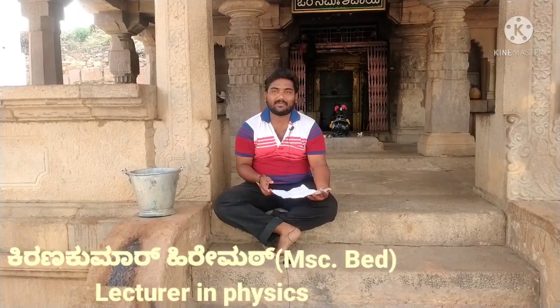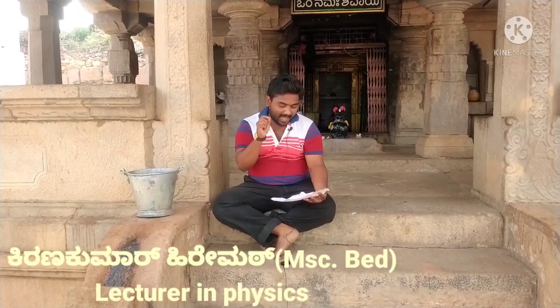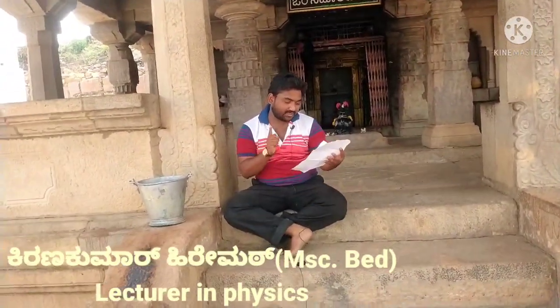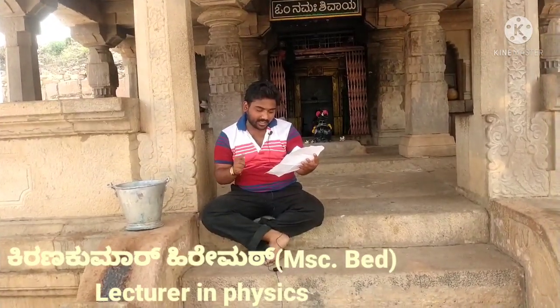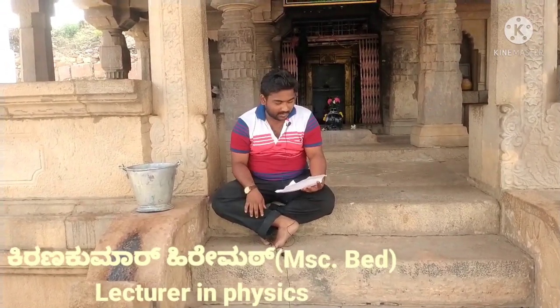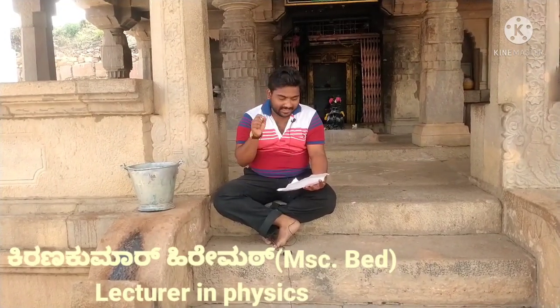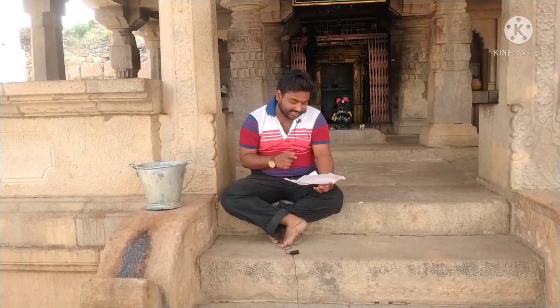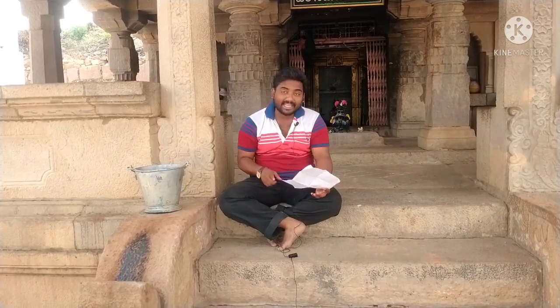We are going to discuss Part C, which mainly contains three-marks questions — question numbers 26 through 35. The chapters covered include electric potential and capacitance, current electricity, moving charges and magnetism, magnetism and matter, electromagnetic induction, alternating current, wave optics, atoms, nuclei, and semiconductors.